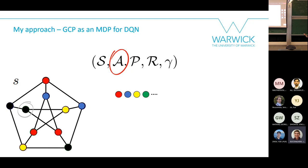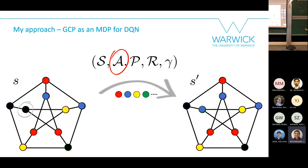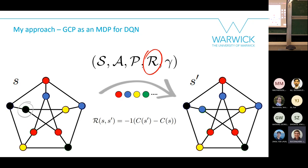The graph coloring rule works as follows: list the colors you plan to use beforehand, and once you've chosen a vertex, give it the first color it can take. For example, if the chosen vertex is adjacent to a yellow and a red vertex, it can't be red but it can be blue — so it gets blue. The transition probability function P is not very interesting here because the task is deterministic: given a state and action, the next state is fully determined.